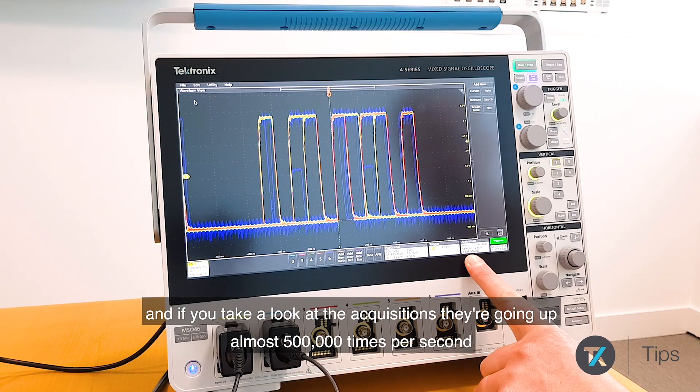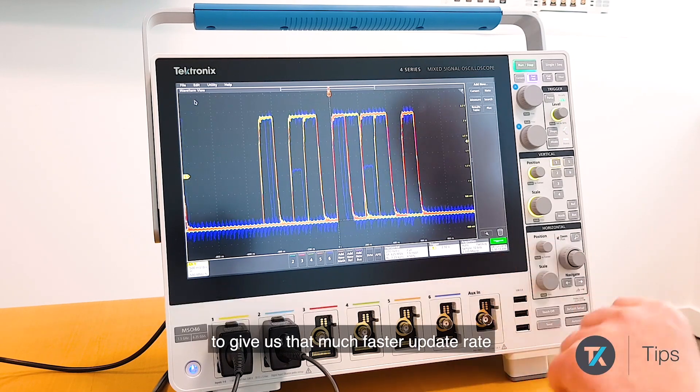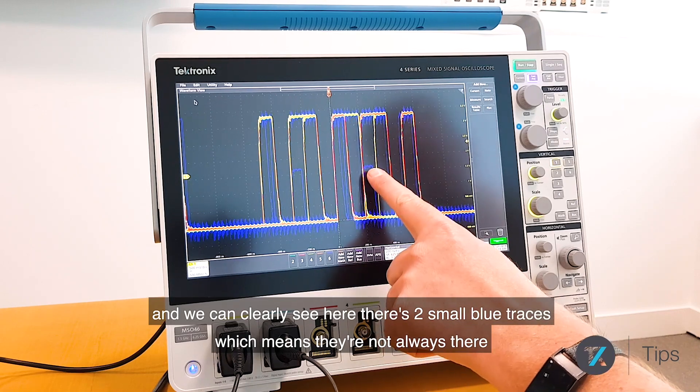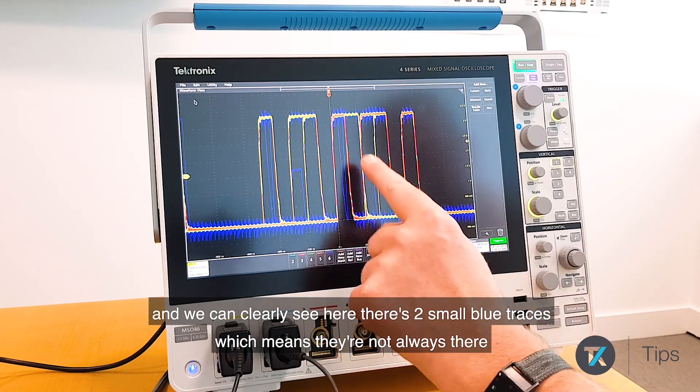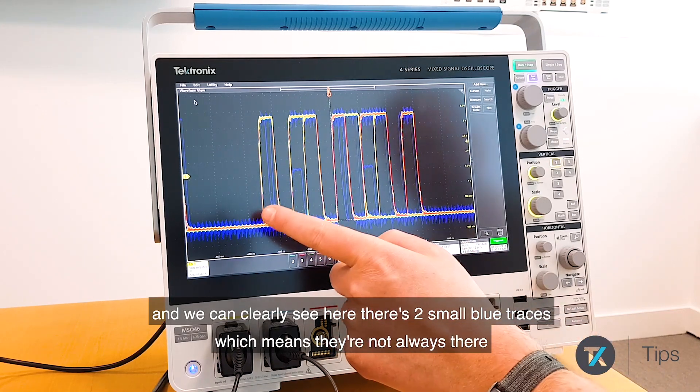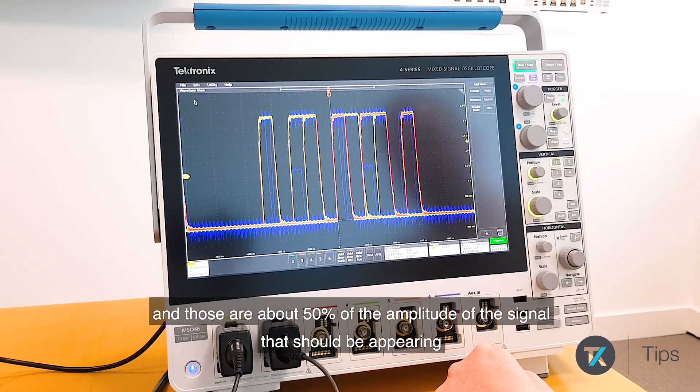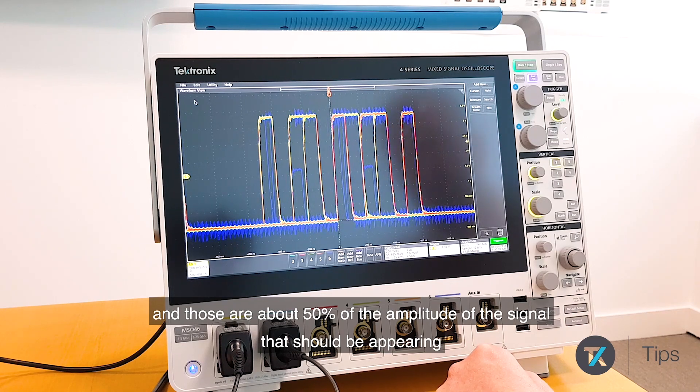We can clearly see here there's two small blue traces which means they're not always there, and those are about 50% of the amplitude of the signal that should be appearing.